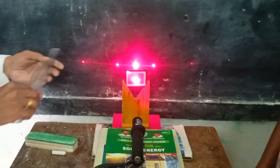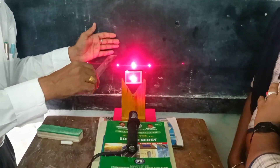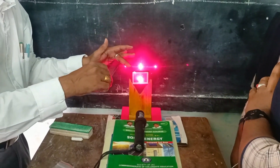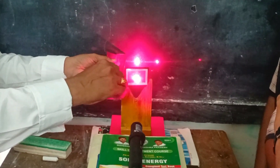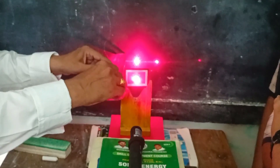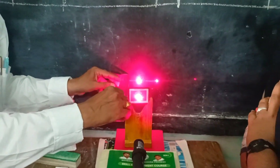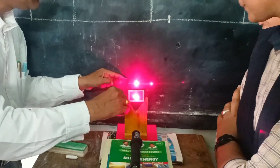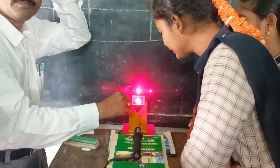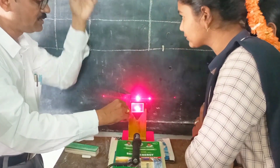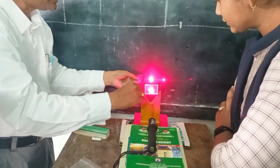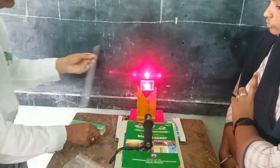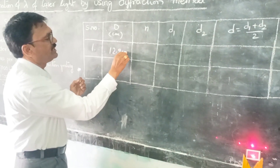Now we have to find the distance from the screen to the grating. Measuring it — it is 12.9 cm. So the distance from the grating to the screen is 12.9 cm.